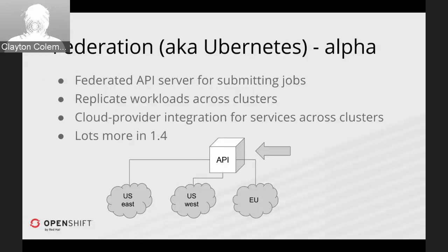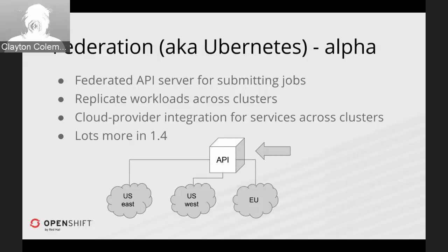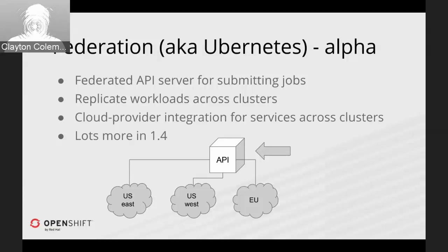Along with better applications and more performance, we really want to make the cluster easier to run and manage. Federation — the idea of having an API that looks a lot like Kubernetes available for talking to multiple clusters, with specific use cases that let you replicate pods across a set of clusters consistently, as well as services that allow global access — is targeted for alpha in Kubernetes 1.3. It's a pretty big feature, so we expect to get the foundational pieces in 1.3 with some trailing into Kubernetes 1.4. The goal is to enable people with clusters in multiple geographies to easily replicate applications across a wide range.